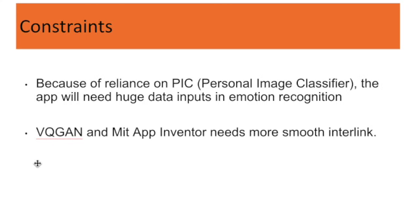Some constraints in my app are that because of the reliance on the Personal Image Classifier, the app will need huge data inputs for emotion recognition, meaning that the user will need to dramatize their facial expression so the PIC can easily recognize it. Additionally, VQGAN and MIT App Inventor still need smoother integration to work within the app.